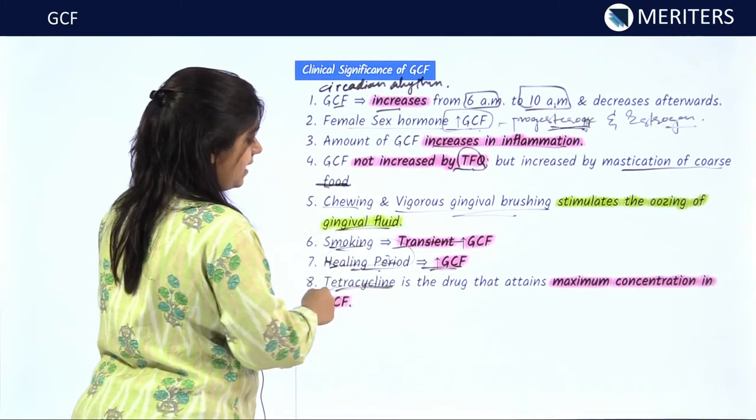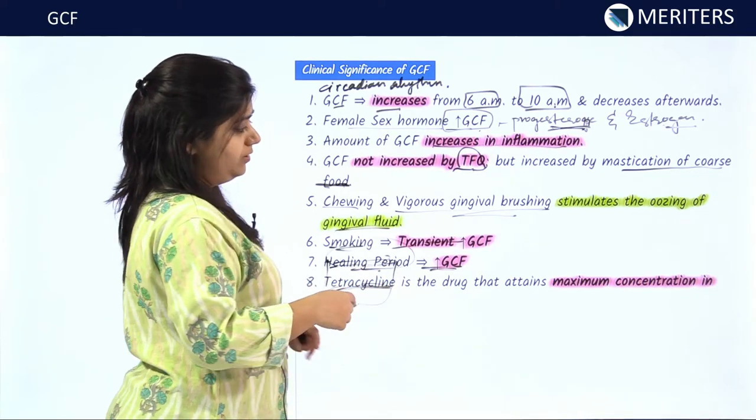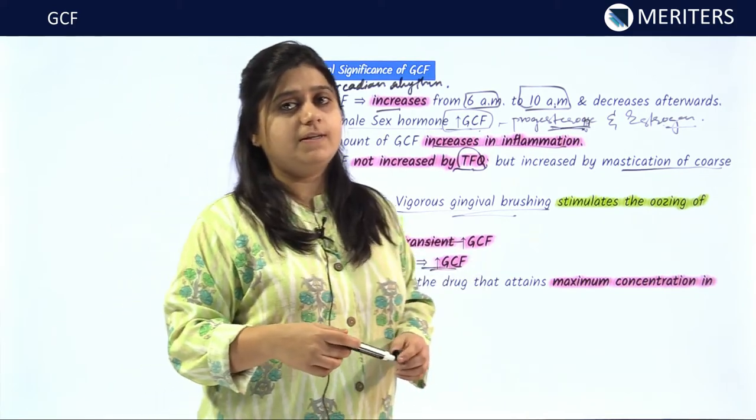Tetracycline is the drug which shows the highest — maximum — concentration into the GCF.